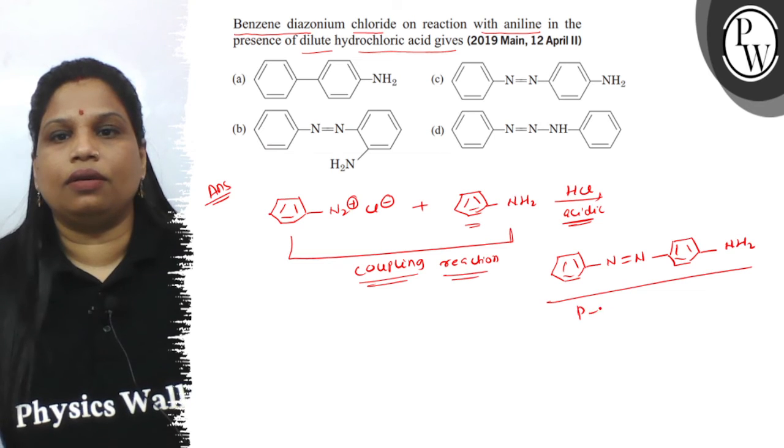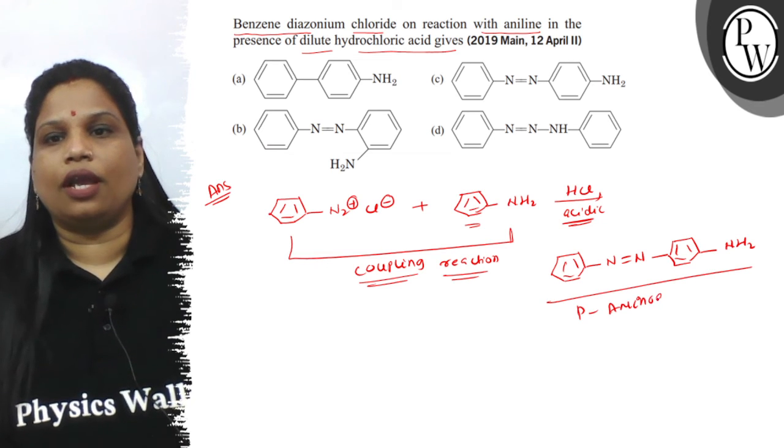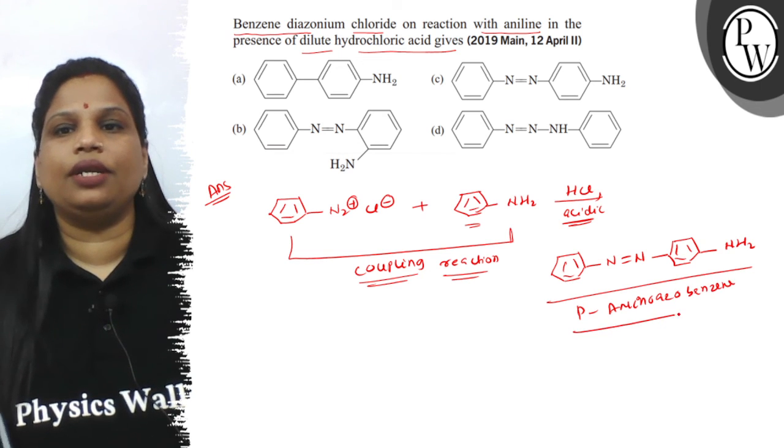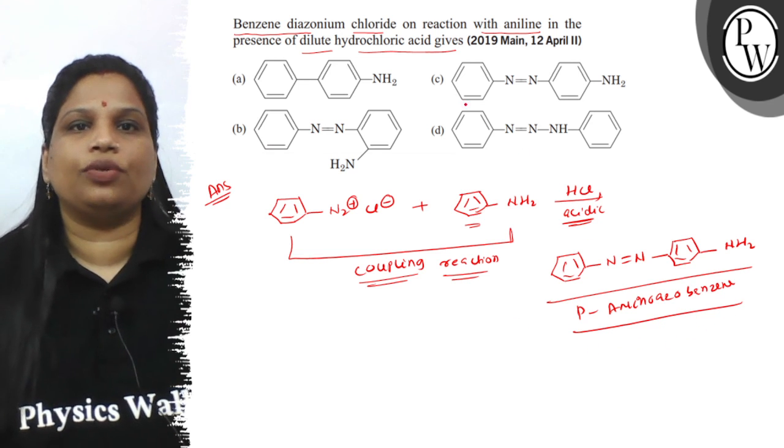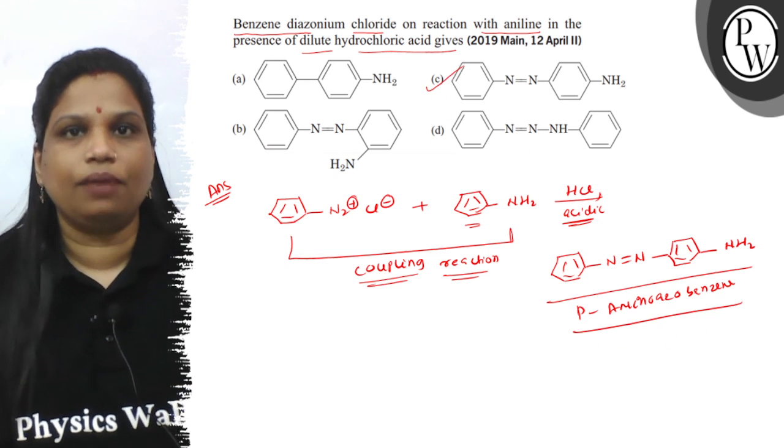This is the product, para-aminoazobenzene. This is a coupling reaction and the product is para-aminoazobenzene. According to this, the correct option is C. I hope you understood well. Best of luck.